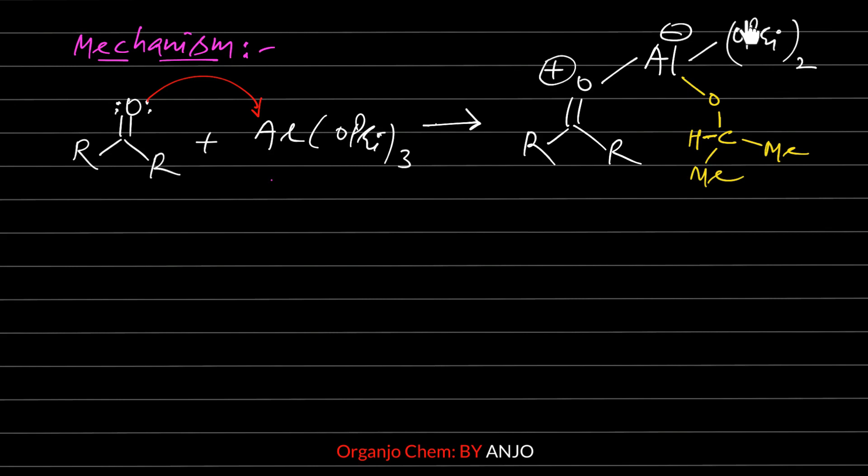In this Aluminum Isopropoxide, there are 3 isopropoxide groups — 2 are bonded and 1 is separate — and we have a formula for this structure.